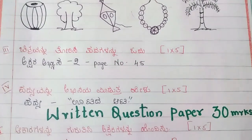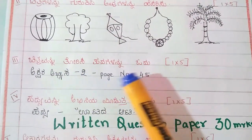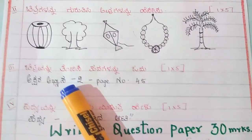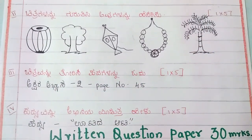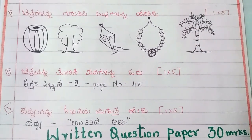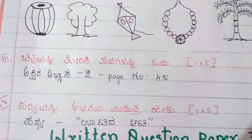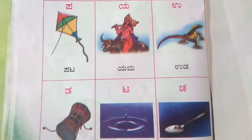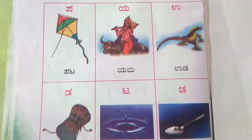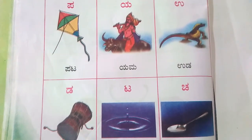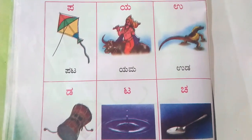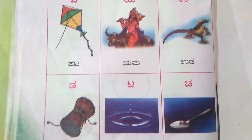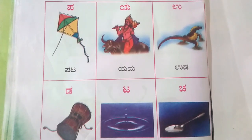Moving to the next question: Chitra vanna tori si padagalannu odu. I have taken this activity from the textbook, page number 45. This question carries 5 marks. In this video, you can watch the letters and the words beginning with those letters. The child has to identify the letters and read them. This question carries 5 marks.